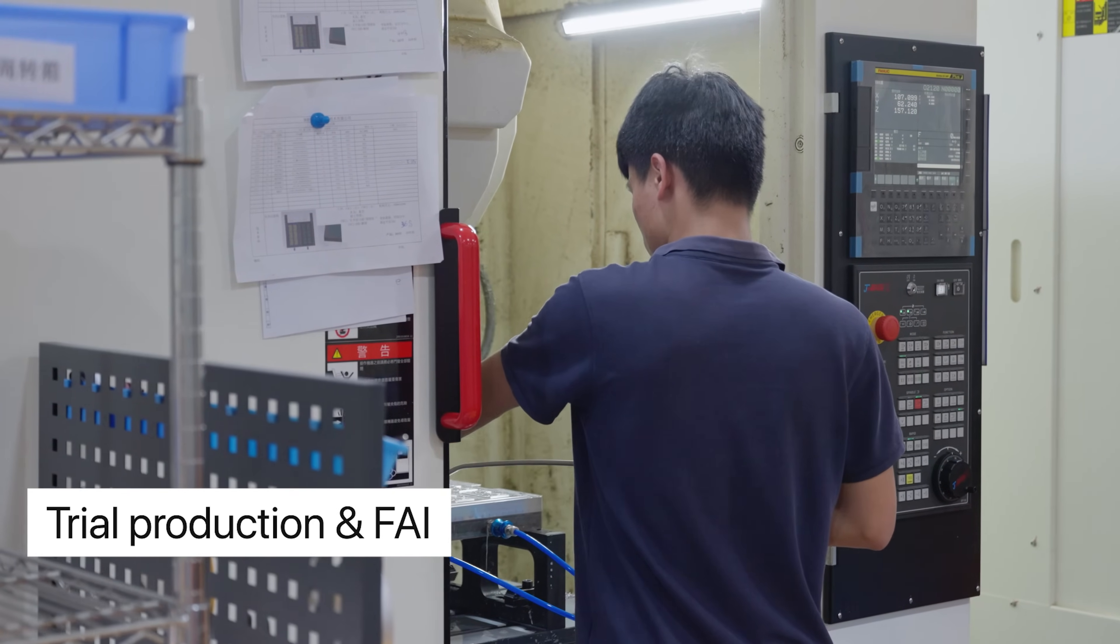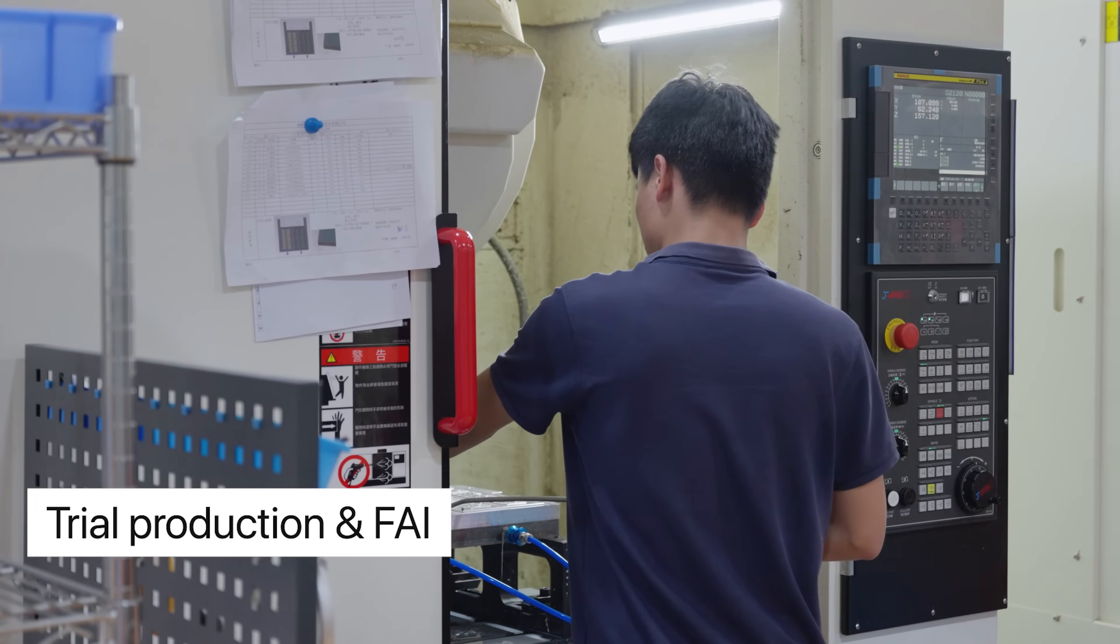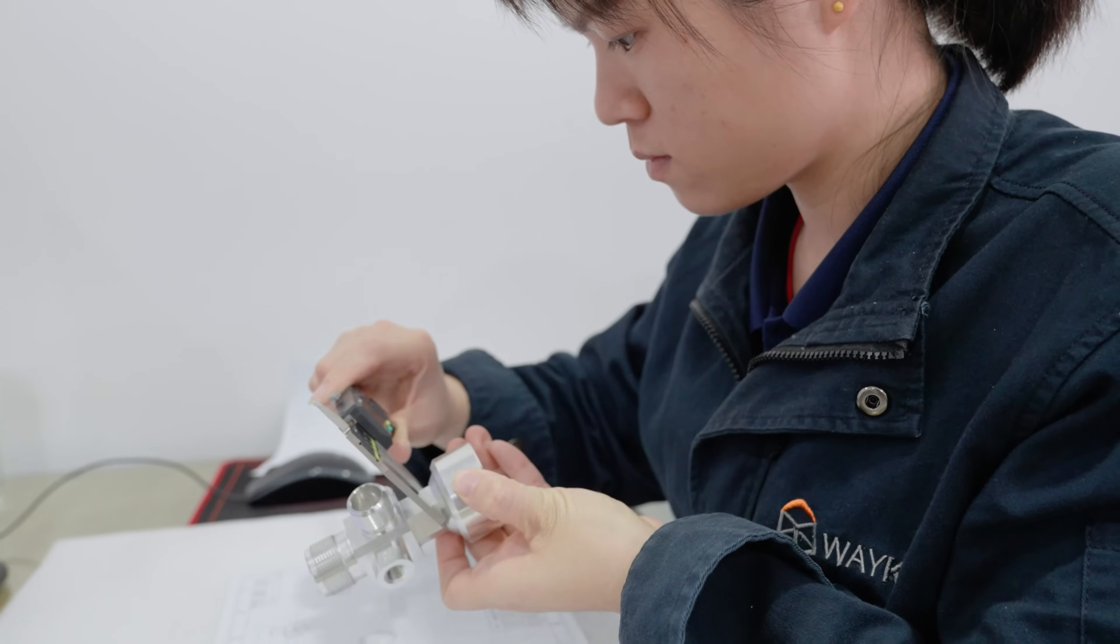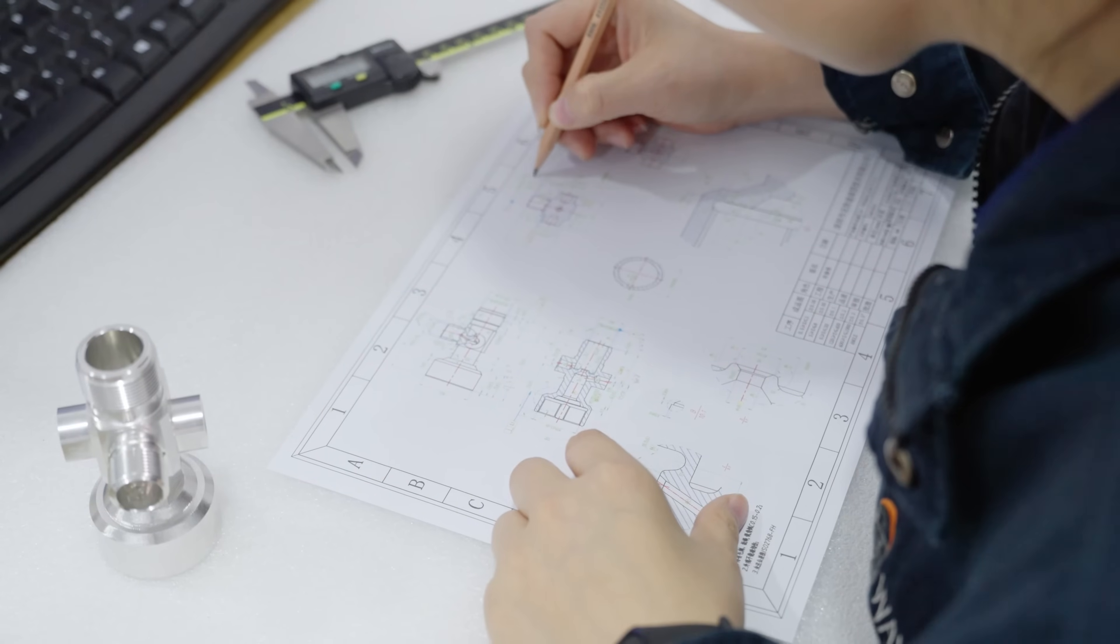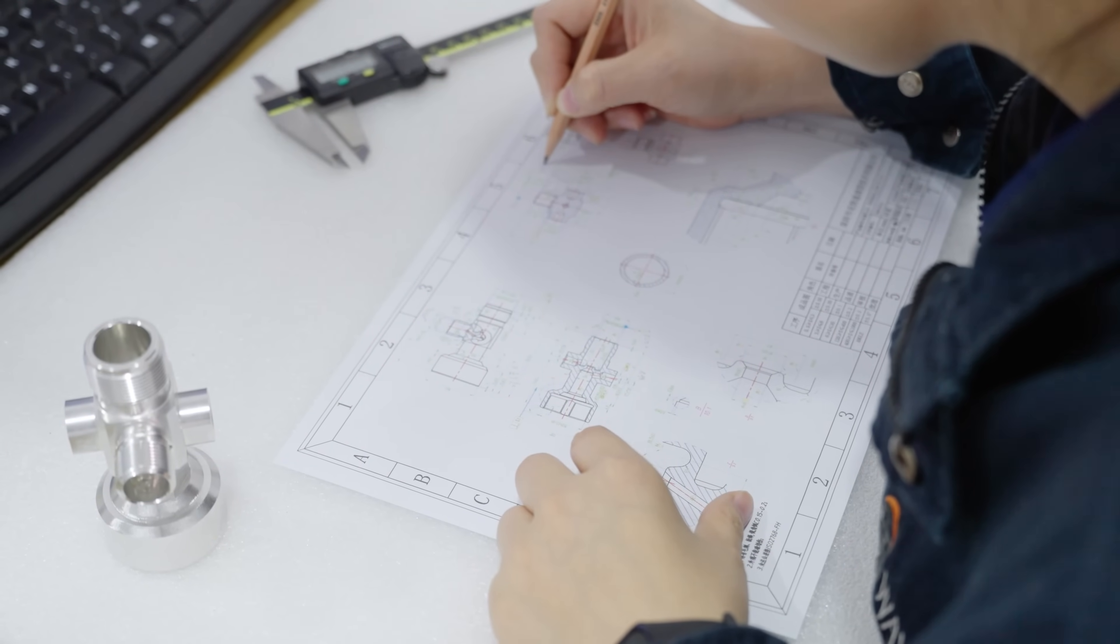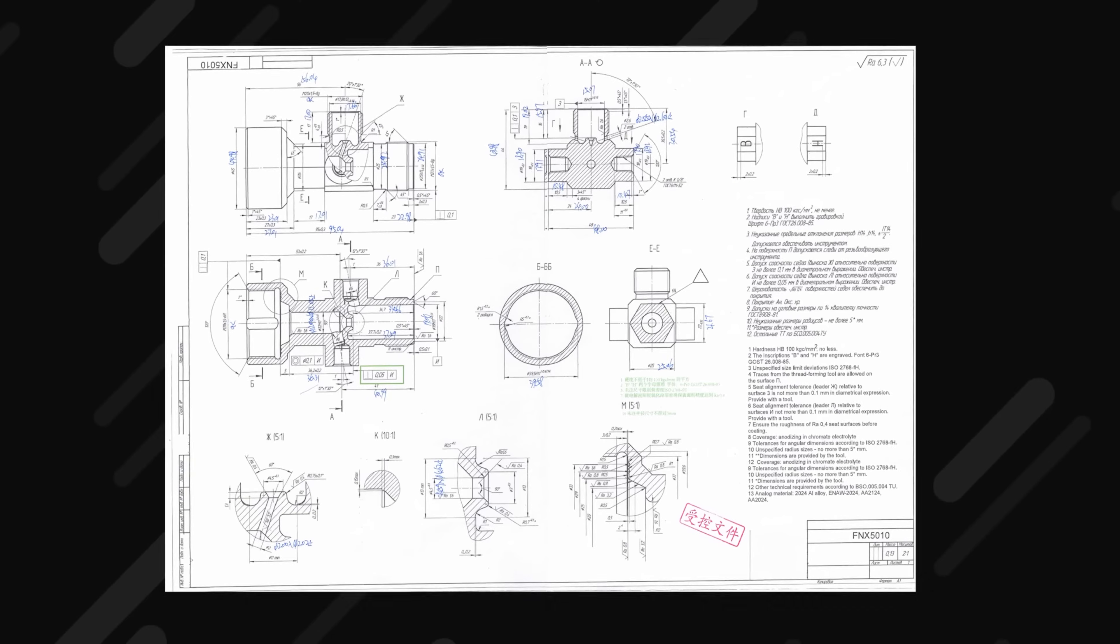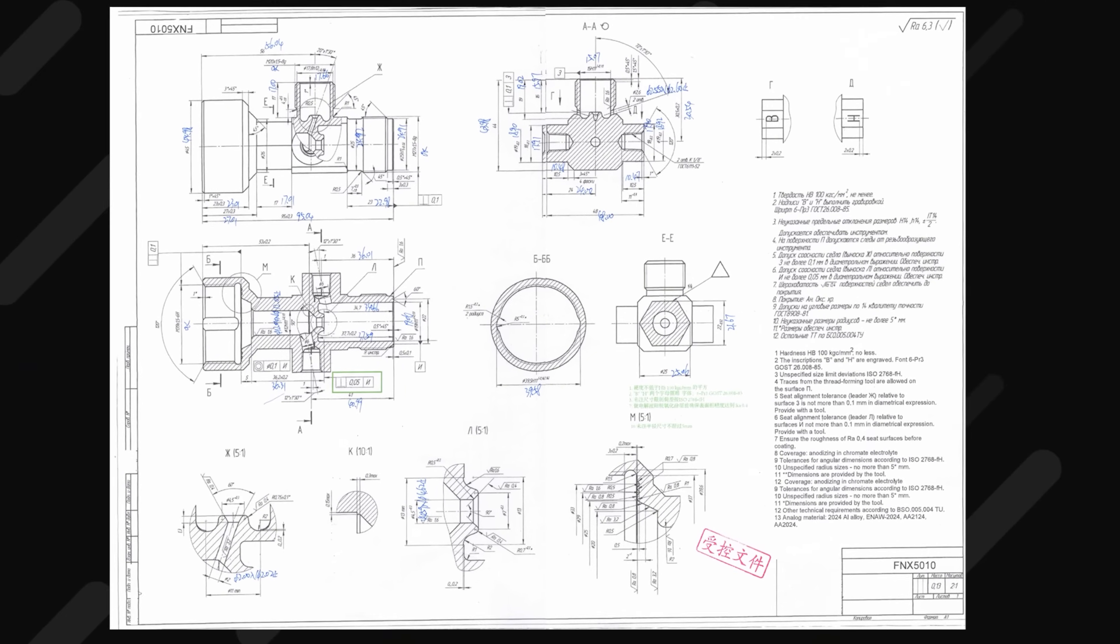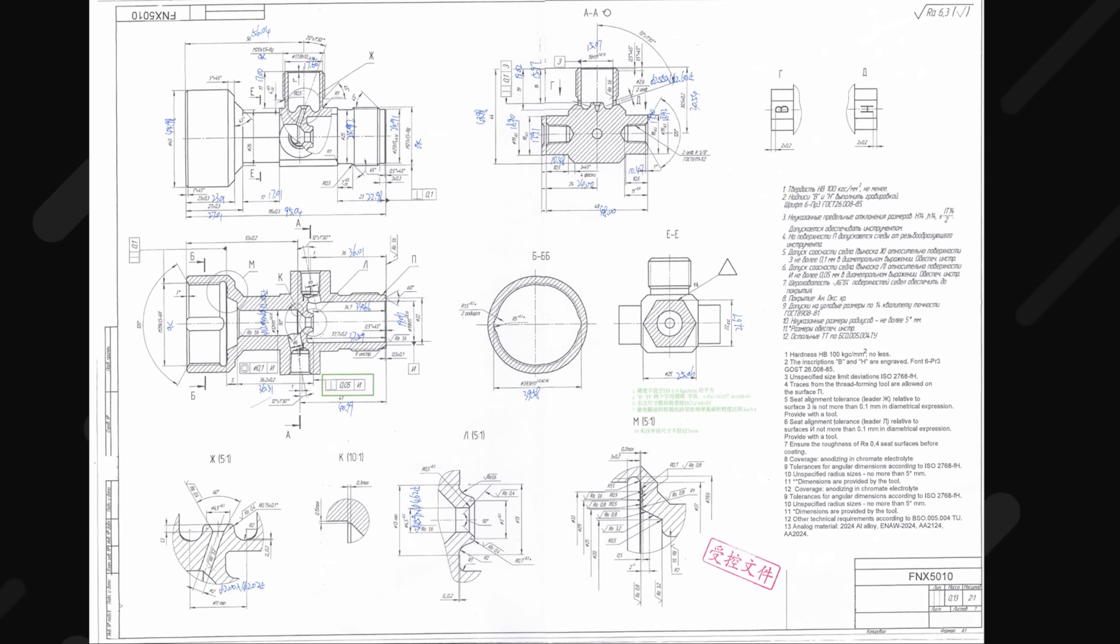Third, trial production and FAI. After the part being manufactured step-by-step, we will full-scale inspect it according to the 2D drawing by our inspection team. Here are the inspection data recorded on 2D drawing and reports created by coordinate measuring machine.